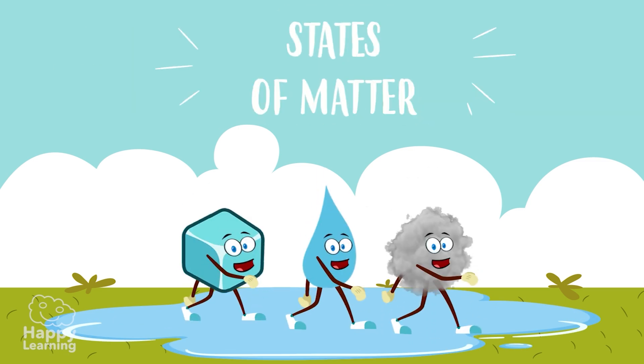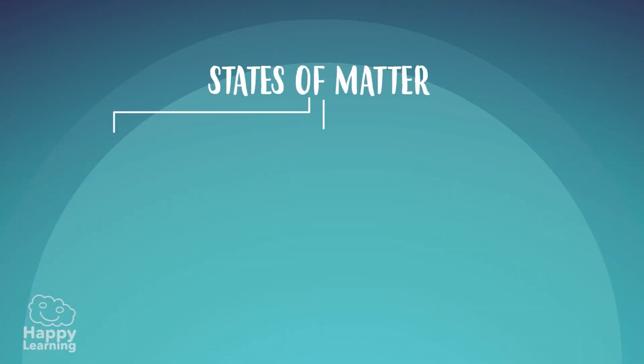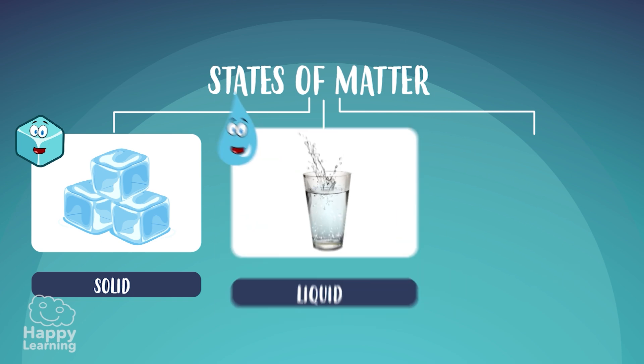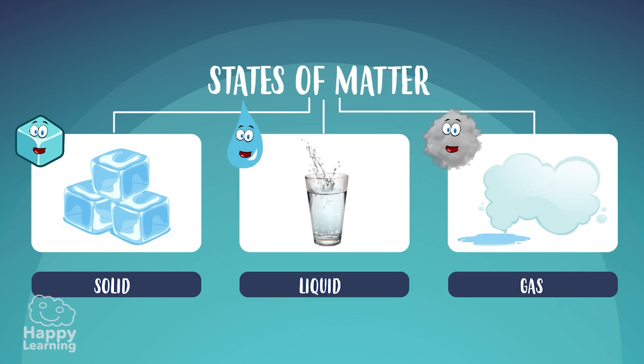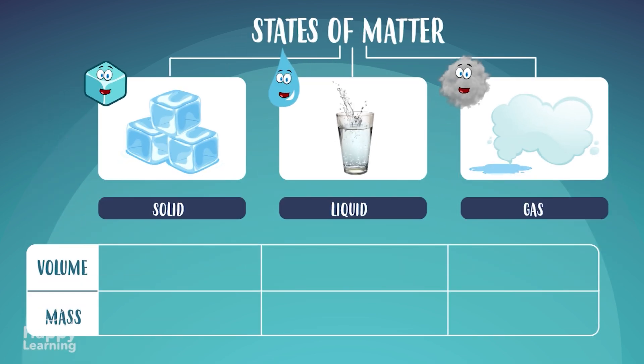Well, today we're going to learn about the states that matter can be in. Matter can be in three states: solid form, liquid form, and gas form. Each one of these has its own characteristics. Let's get to know them!